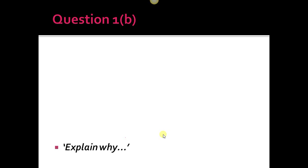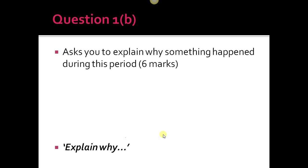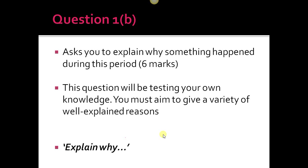Question 1b will ask you to explain why something happened in this period, 1905 to 1924 in Russia. It's worth six marks. This question tests your own knowledge. You must aim to give a variety of well-explained reasons. It's asking why something happened, not how it happened—the reasons why something happened.